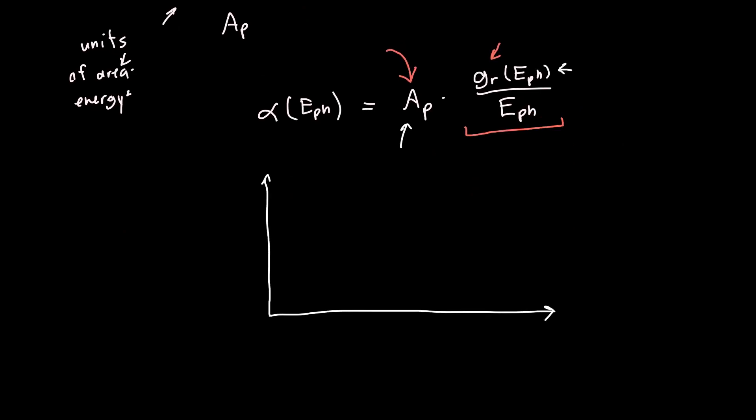Let's plot the reduced density of states as a function of the photon energy. We know that up to the band gap, our density of states is just going to be zero. Then it's going to start to look like this square root function, going like the square root of the photon energy minus the band gap.